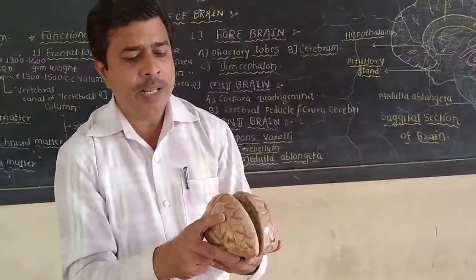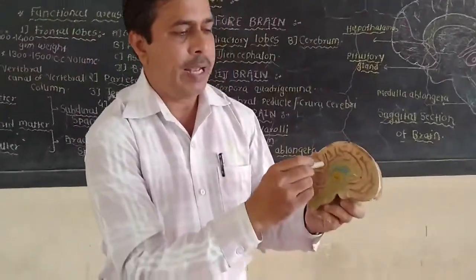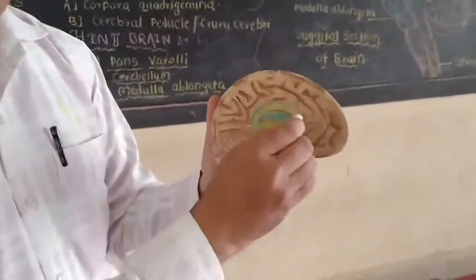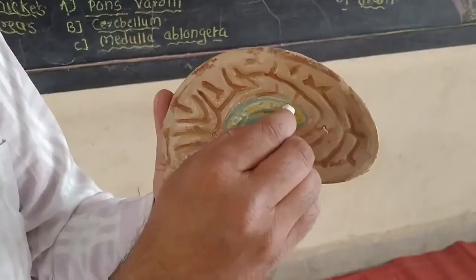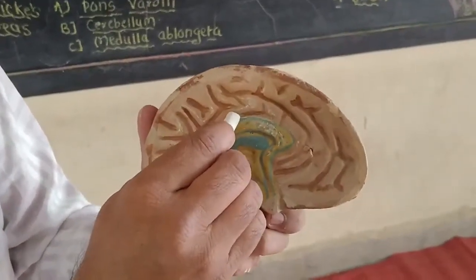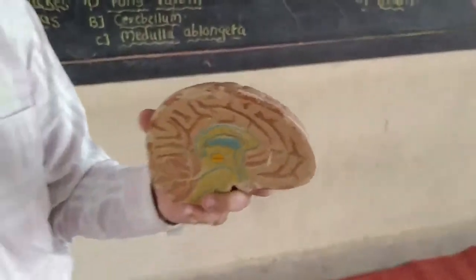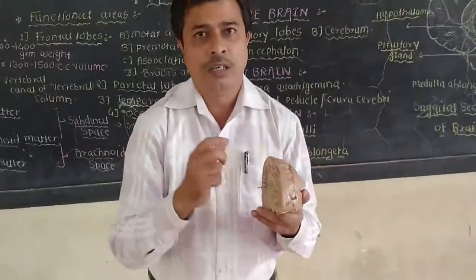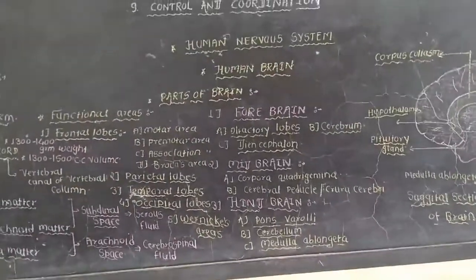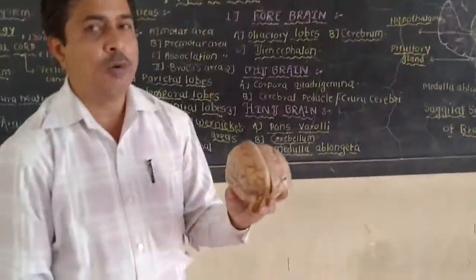The two cerebral hemispheres are connected with each other internally by a thick tract of fibrous membrane known as the corpus callosum. The cerebrum is also divided into different lobes, and there are four different lobes present, along with a fifth lobe.